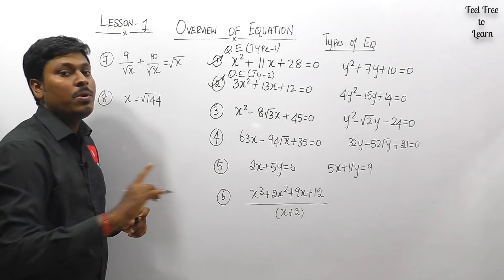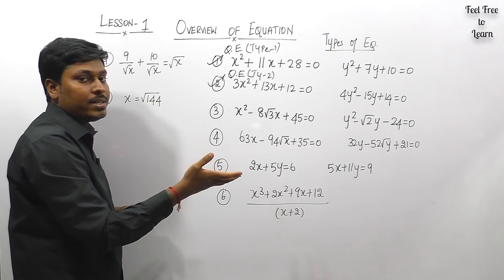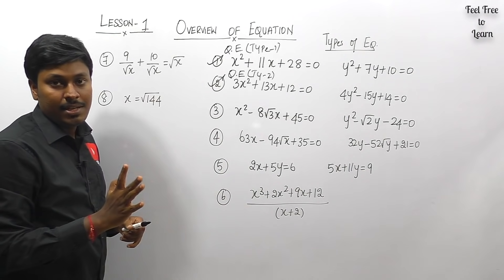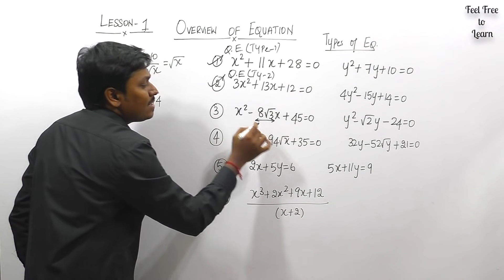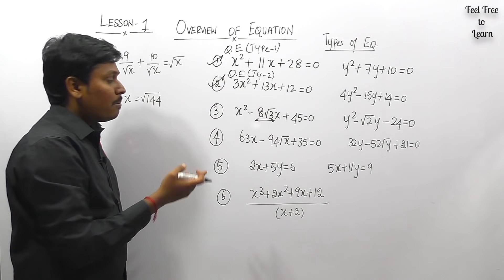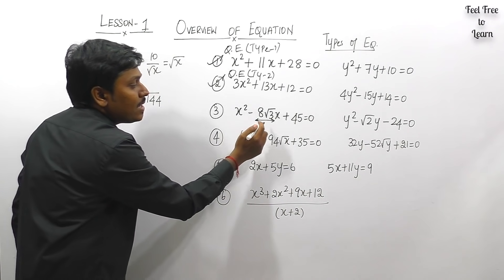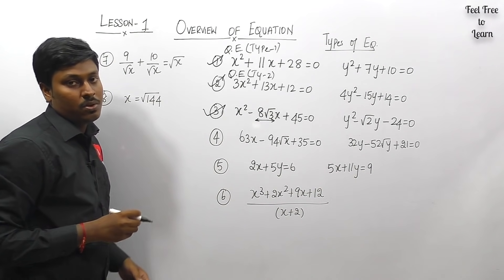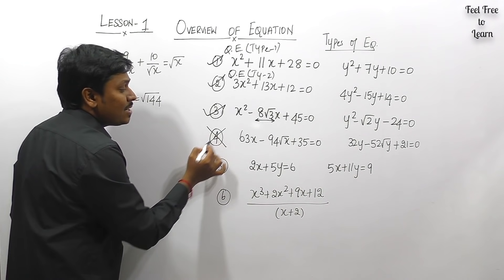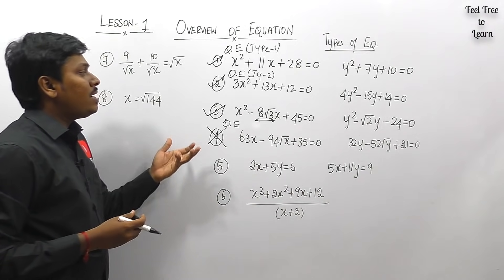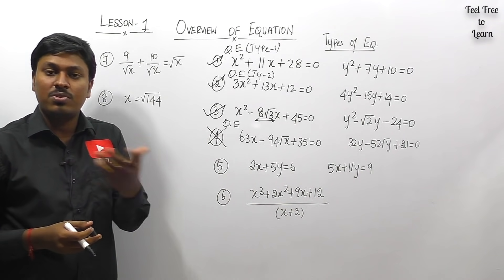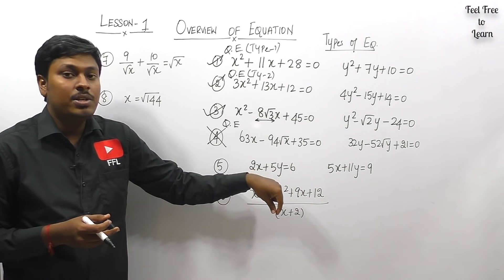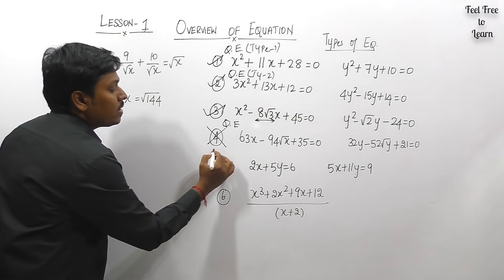Question number three is also a quadratic equation — x², x, and a constant — and similarly for y. But the difference from Types 1 and 2 is that here the coefficient of x is expressed in terms of a root value, such as √13, √11, or √9. In lesson four we will solve questions based on this root-based quadratic equation. This is one exceptional case where the equation must first be converted into a proper quadratic form before solving.